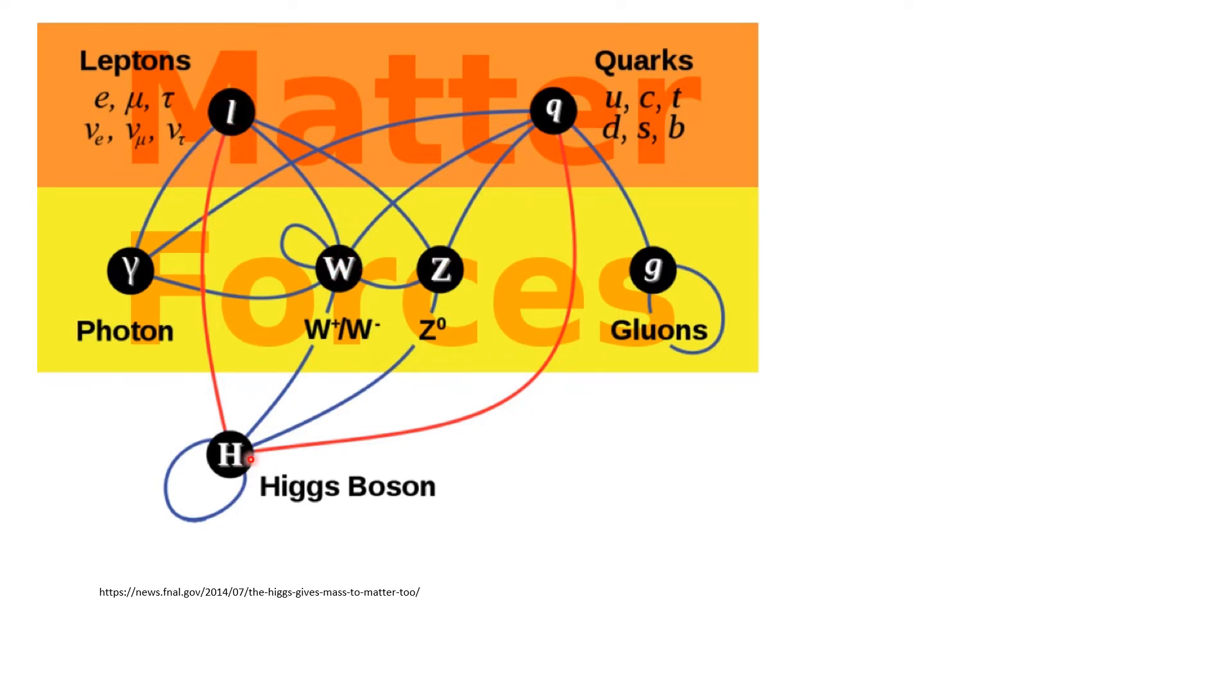and from the interaction terms between the Higgs field and the fields for these particles, those are the terms in the Lagrangian, one could back calculate what the expected mass of the Higgs particle is based on the observed values of these other masses and based on the parameters in the standard model.